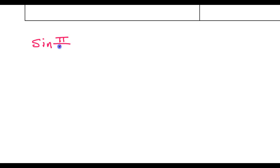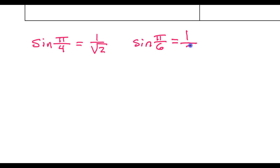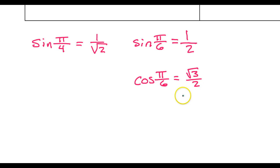Before we get started, let me remind you there are three values that you need to simply memorize. You need to memorize the sine of pi over four, which is one over radical two — some people like to say radical two over two, but I'm going to use this form. You also need to memorize the sine of pi over six, which is like 30 degrees — the sine of pi over six is one half. And third, memorize the cosine of pi over six, which is radical three over two. If you memorize these three facts and know a couple of patterns, you can get everything else you need without having to actually memorize.